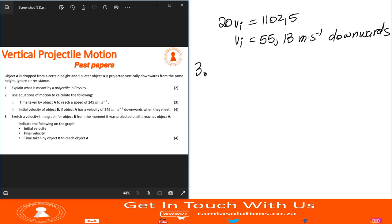Now, they say sketch the velocity time graph for object B from the moment it was projected until it reaches object A. Something about this question is that it didn't give us or indicate on the graph the initial velocity, final velocity and the time taken. What's unfair with this question is that we didn't calculate final velocity of object B, so we have to find that.